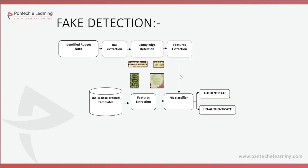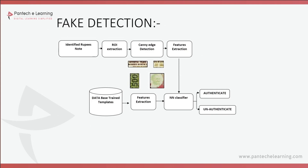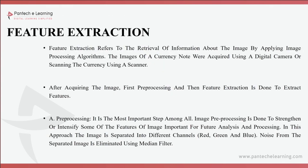Once the rupee denomination is identified, ROI is applied and a particular portion is taken along with canny edge detection. GLCM is applied again on the ROI region, and the same process is run for the database. An SVM classifier is then applied to classify the note as original or fake. These two different block diagrams together lead to the full classification of note type and authenticity.